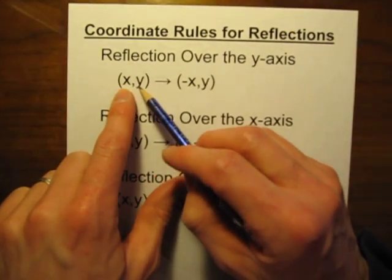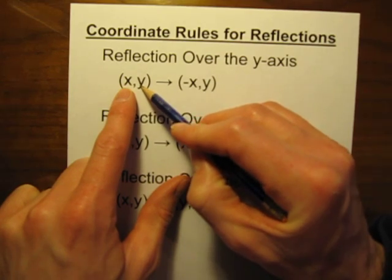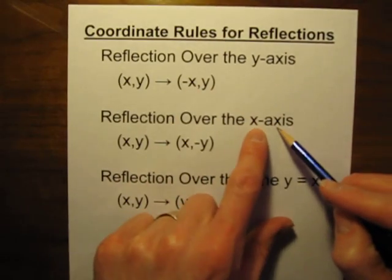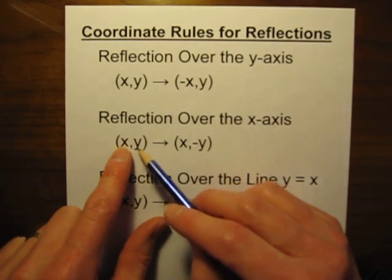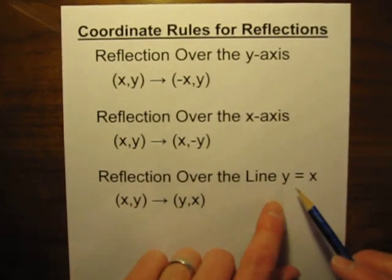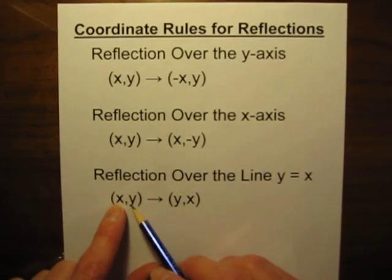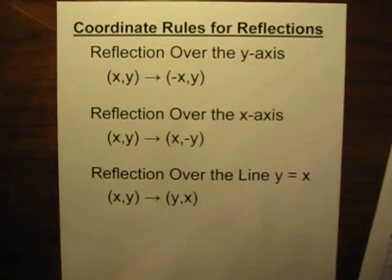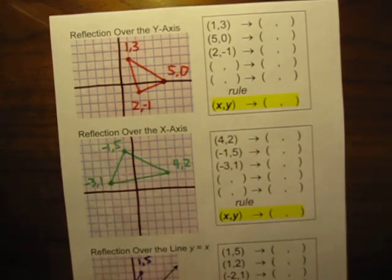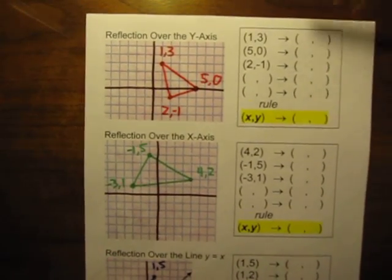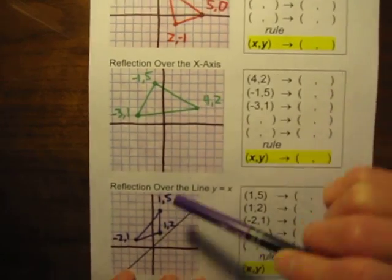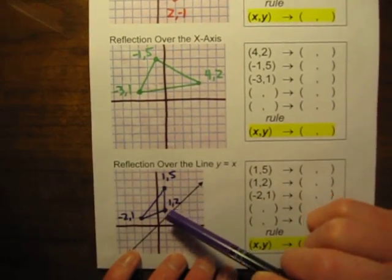If you have any point with the general coordinates x and y: if you're reflecting over the y-axis, the coordinates become negative x, y. If you're reflecting over the x-axis, the new coordinates go from (x, y) to (x, negative y). And if you're reflecting over the line y equals x, coordinates (x, y) become (y, x). Now just looking at this makes no sense at all, so to see where this comes from, I'd like to go through a few examples. We're going to look at reflecting a triangle over the y-axis, the x-axis, and the line y equals x.